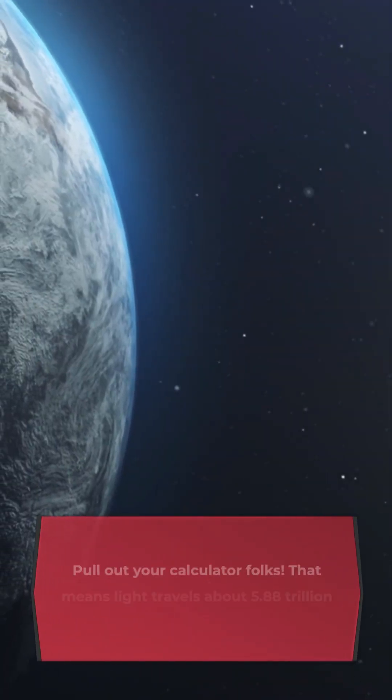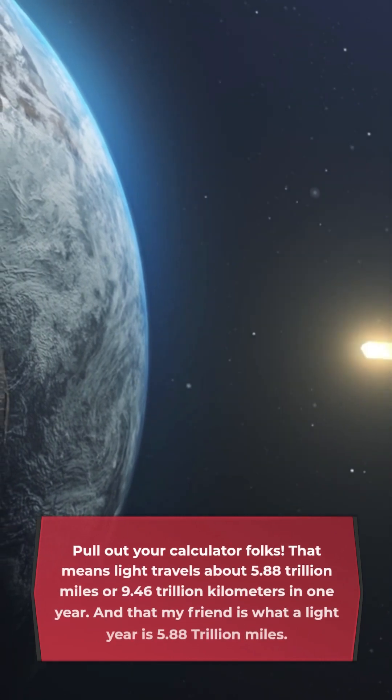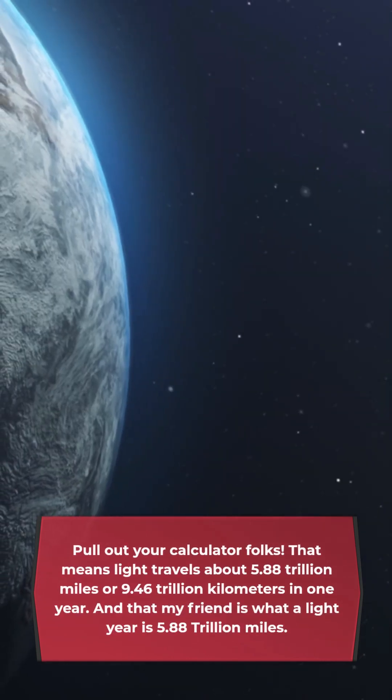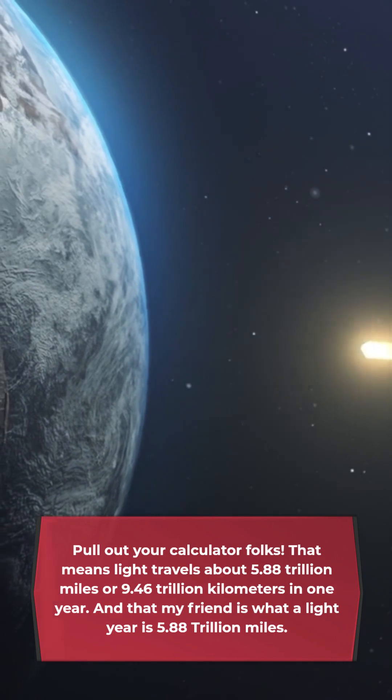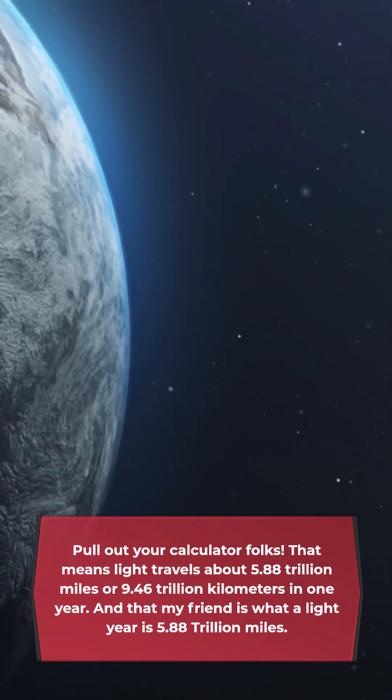Pull out your calculator folks. That means light travels about 5.88 trillion miles or 9.46 trillion kilometers in one year. And that my friend is what a light year is: 5.88 trillion miles.